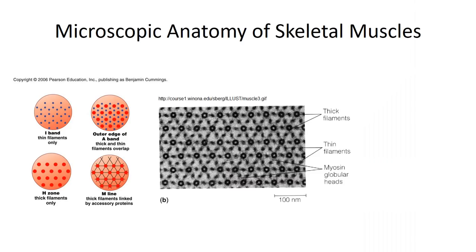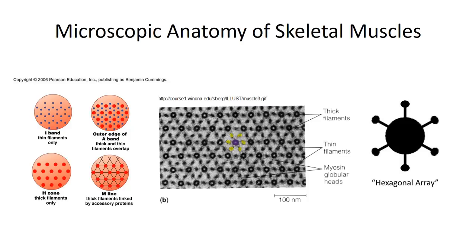Under high-magnification electron micrographs, these associations are visible. Here is an electron micrograph showing the cross-section of a sarcomere at the outer edge of the A-band, with the overlap of thick and thin filaments clearly visible. Pick any one of the thick filaments and count the number of thin filaments that surround it — you'll end up counting six surrounding thin filaments. Remember when I said that the myosin heads project out in six different directions, forming a hexagonal array? These are the six filaments they are projecting towards. The hexagonal array maximizes cross-bridge contact, which in turn maximizes force generation during muscle contraction.